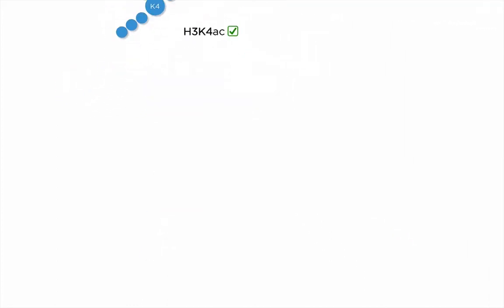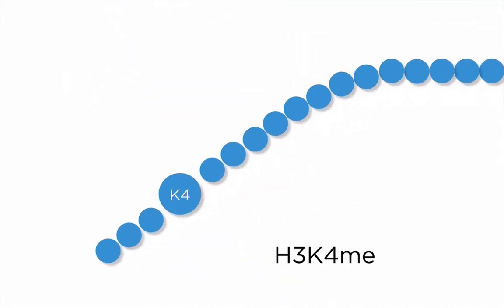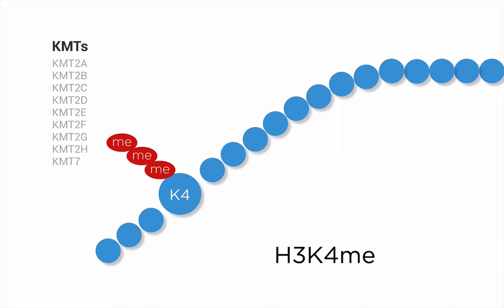The methylation of H3K4 is a little more complex. H3K4 can be modified with one, two, or three methyl groups. Those groups are attached to the lysine by lysine methyltransferases, so-called KMTs. In the case of H3K4, methylation is generated primarily by the KMT2 family.